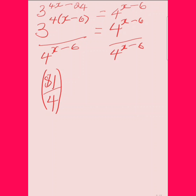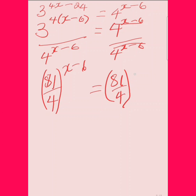Because we have this common exponent, we can raise everything to the x minus 6. On the right side, dividing anything by itself gives 1. I'm going to replace that 1 with 81 over 4 to the power of 0, because anything raised to the power of 0 equals 1.